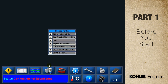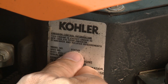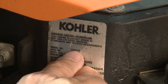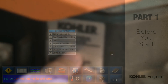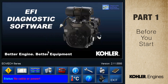Then the vehicle selection menu appears. Check the engine identification decal for the model number you're working on. Select the vehicle you're working with and be sure the engine key is on. Here, I'm choosing the ECH ECV 630-749 engine. After we select the engine, the main screen is displayed. Check the status bar on the lower left to confirm the connection.